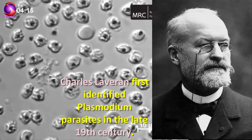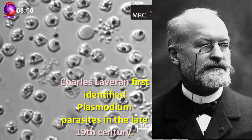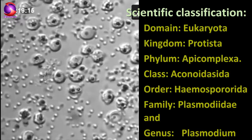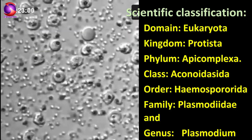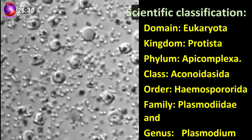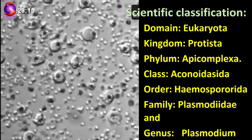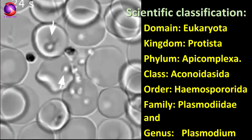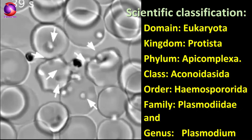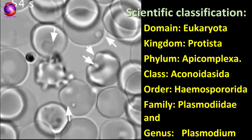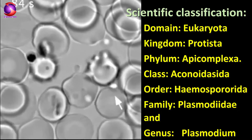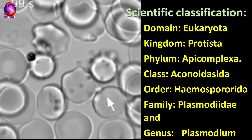Charles Laveran first identified Plasmodium parasites in the late 19th century. After that, many other species were discovered in several hosts and classified further. Plasmodium belongs to the domain Eukaryota because a nucleus is present in the cell body. Further in classification, it belongs to kingdom Protista, phylum Apicomplexa — a large group of parasitic eukaryotes — class Aconoidasida, order Haemospororida, family Plasmodiidae,